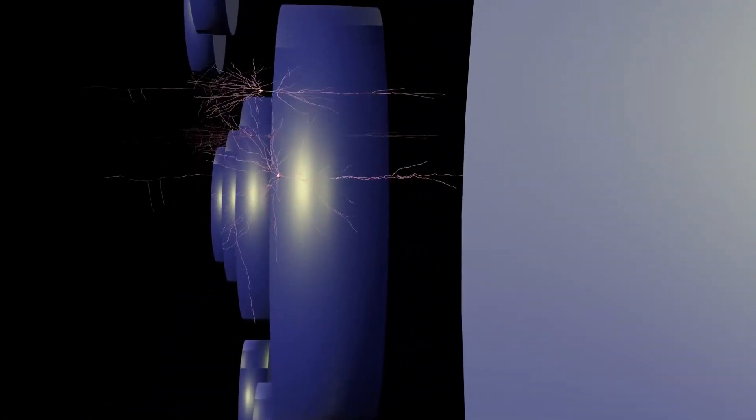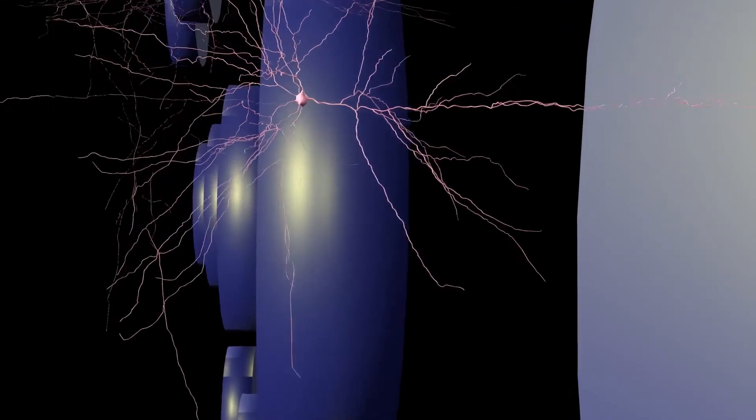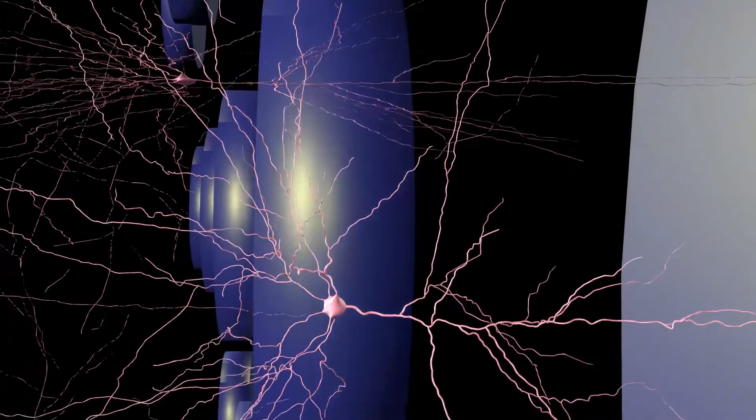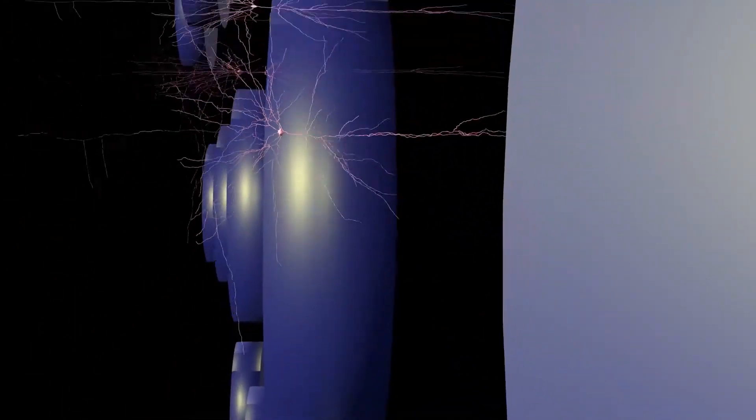In ECOG, electrodes pick up electrical activity from groups of neurons underneath each contact. ECOG has very high temporal resolution, meaning that we can look at changes that happen on the order of milliseconds. Each of our electrodes is only 4 mm apart from its closest neighbor.